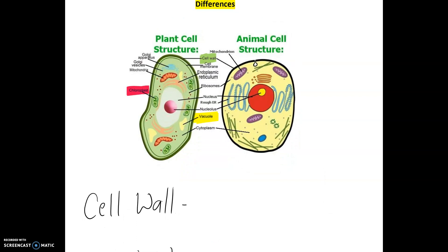The job of the cell wall is to support and protect the cell. It provides the plant cell with a fixed regular shape in comparison to the animal shape which isn't as fixed. It's made out of rigid cellulose.